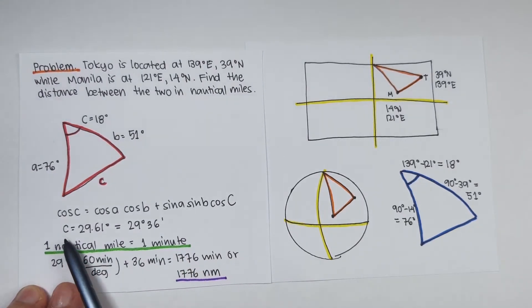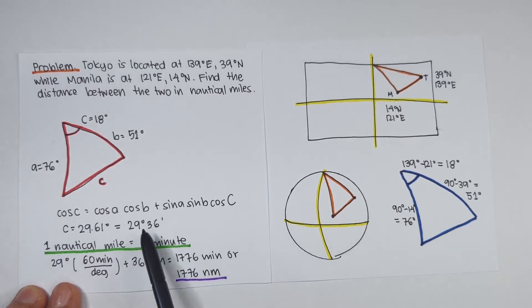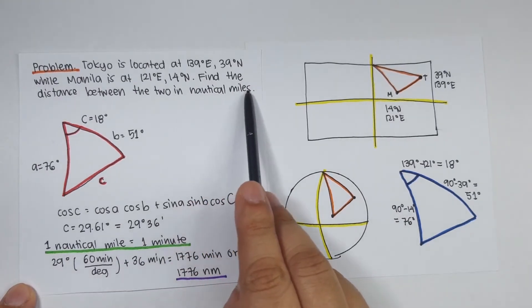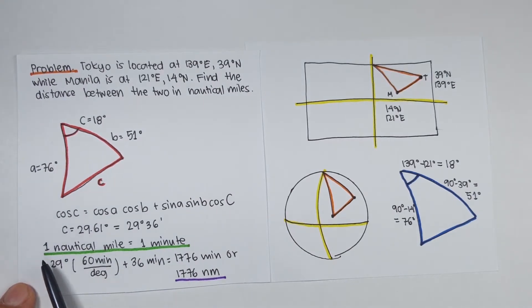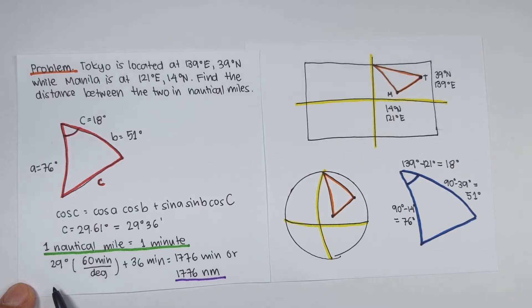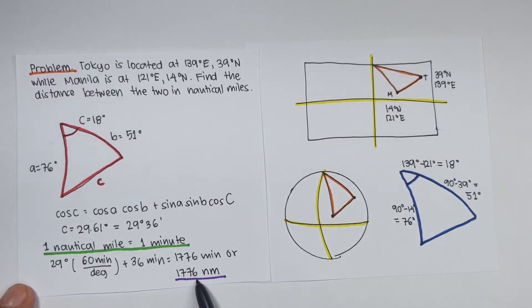Therefore, side C equals 29.61 degrees, or 29 degrees and 36 minutes. Converting to nautical miles where 1 nautical mile equals 1 minute: 29 × 60 + 36 = 1776 minutes, so the distance is 1776 nautical miles.